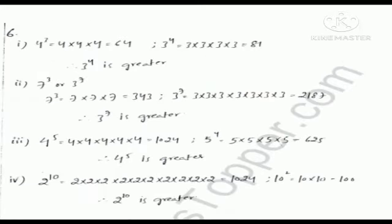In question number 6, identify the greatest number. The two numbers are 4 raised to the power 3 and 3 raised to the power 4. First we solve 4 raised to the power 3: 4 into 4 into 4 equals 64. Then 3 raised to the power 4: 3 into 3 into 3 into 3 equals 81. So 3 raised to the power 4 is greater. You can solve all parts by the same method.